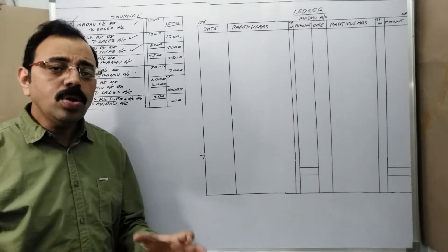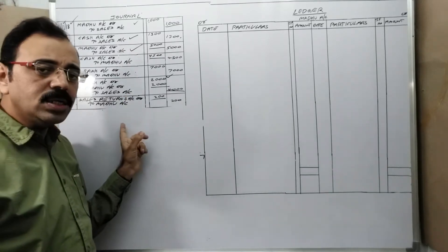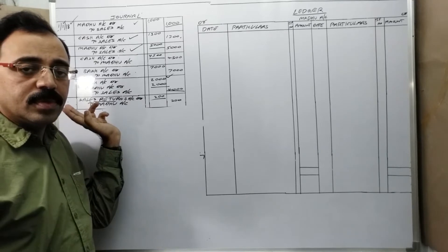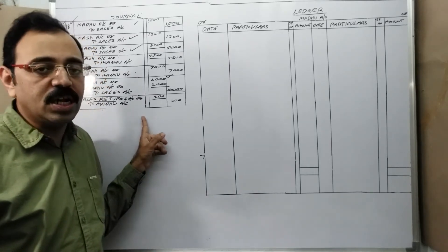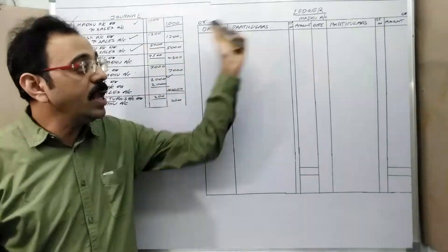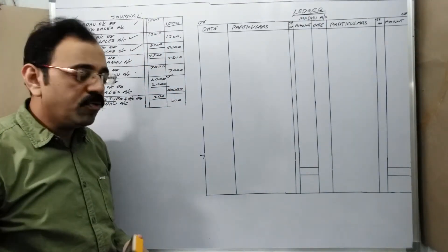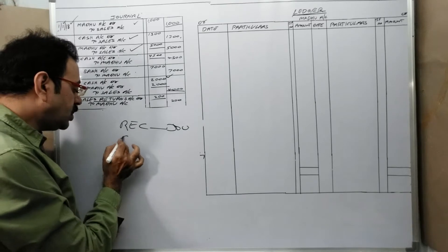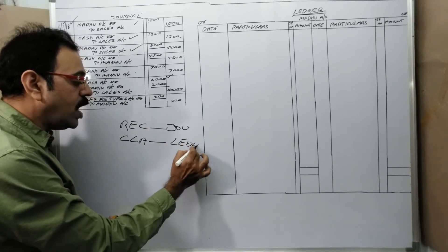To know this answer, let us refer to the journal book. By looking at the journal, can you get that answer? No. The journal book is useful to know when and what happened. Since we cannot remember all transactions, we record them somewhere on a date-wise basis - that is the only use of the journal. You cannot know the net effect of any transactions from it. For that, we have to maintain a separate book. That book is called the ledger.